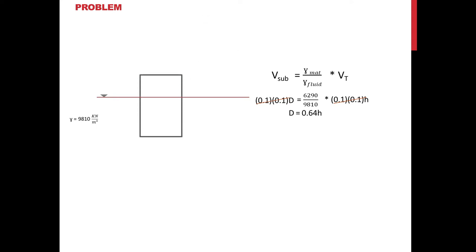Placing the block in fresh water, 64% of H is submerged; therefore the remaining exposed height will be 0.36H. We apply the formula for metacentric height, wherein it is the difference of MBO minus GBO. MBO is the distance of the metacenter to the center of buoyancy, while GBO is the distance of the center of gravity to the center of buoyancy.